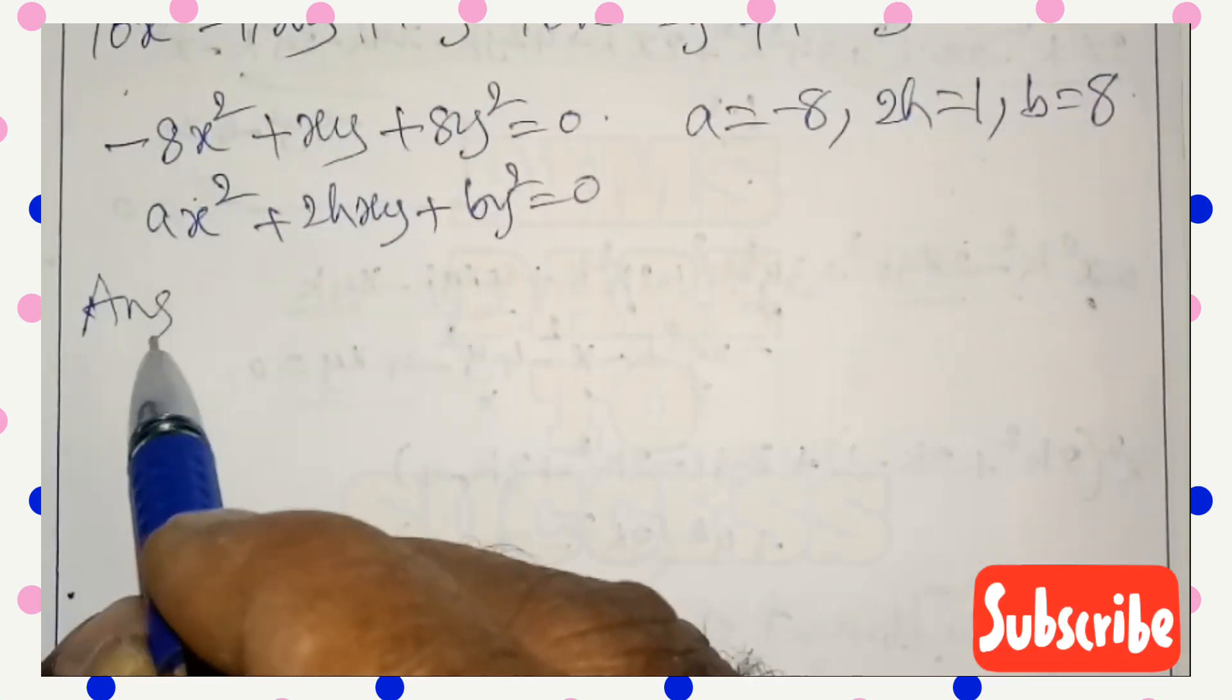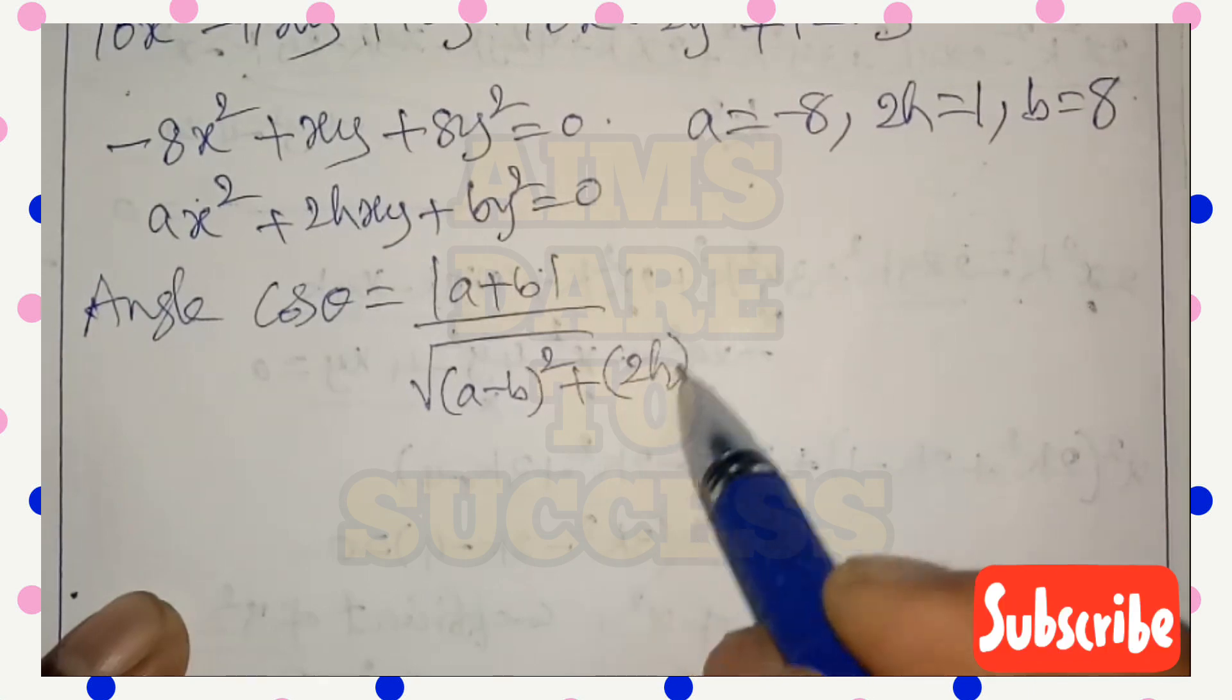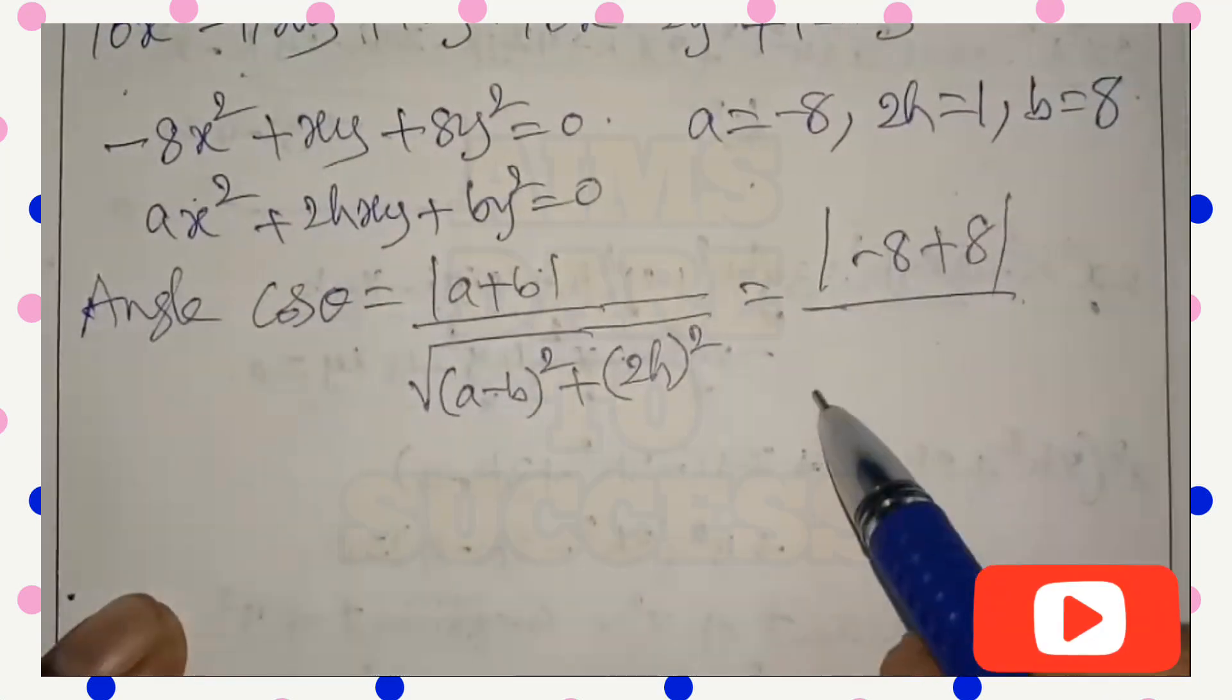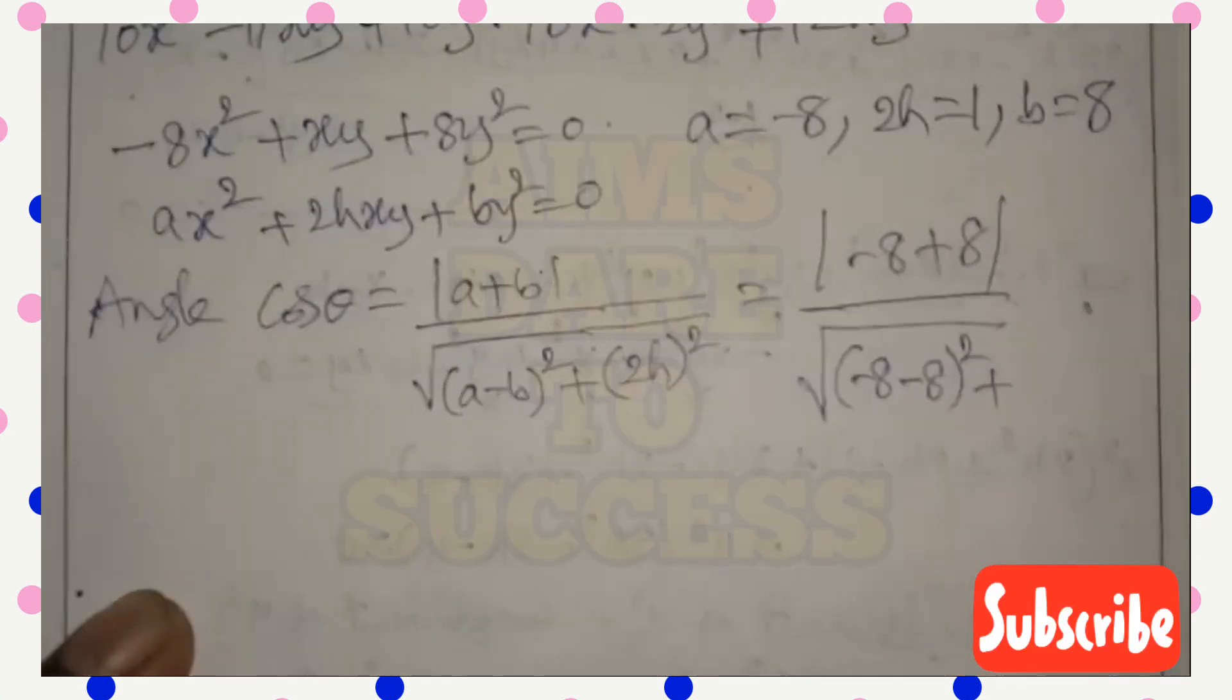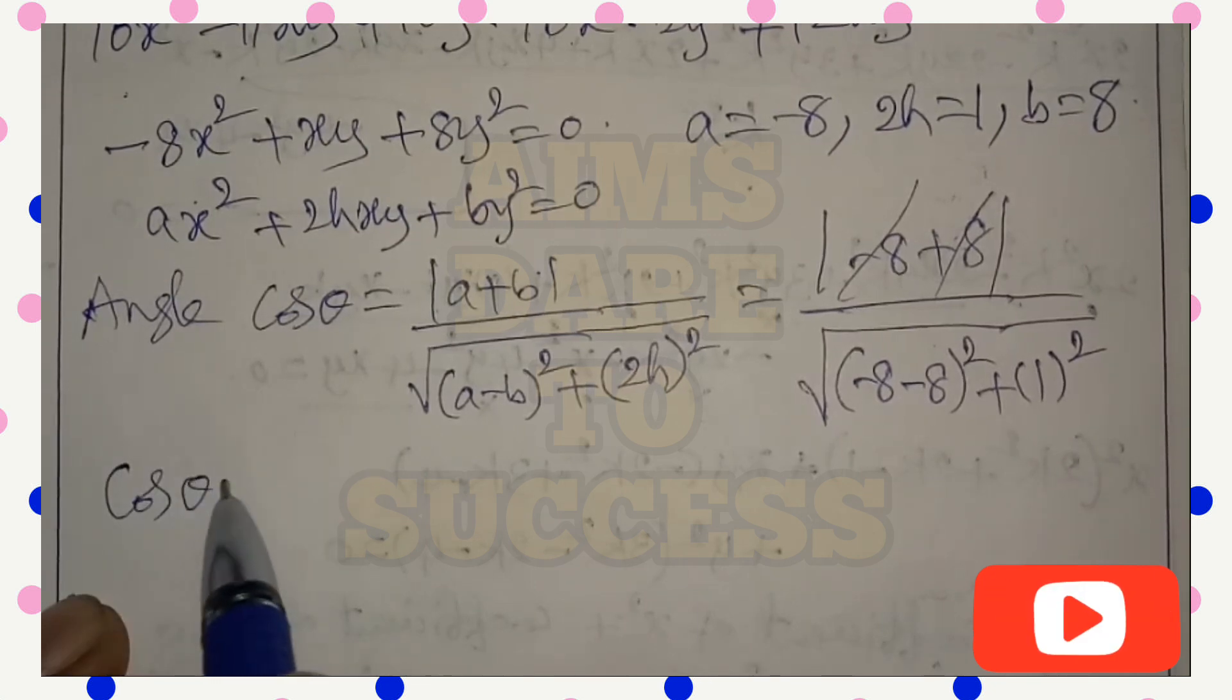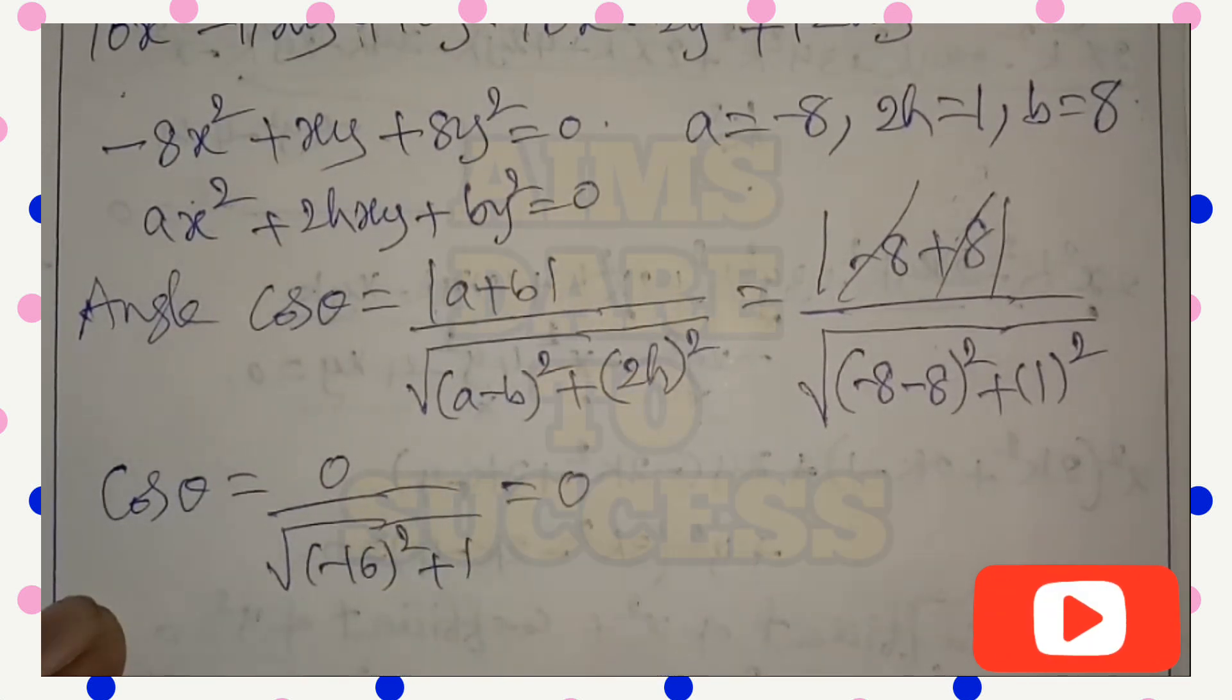Now we need to find angle. Angle formula: cos θ = |a + b|/√[(a - b)² + (2h)²]. So cos θ = (-8 + 8)/√[(-8 - 8)² + 1²]. +8 - 8, numerator get cancelled. cos θ = 0/√257. 0 by something is 0.